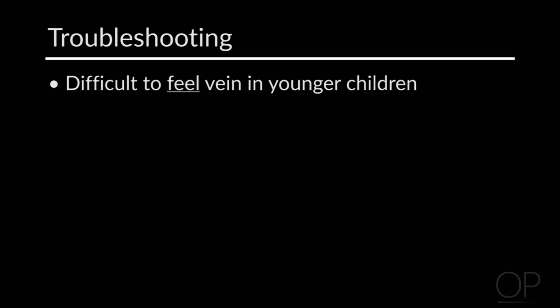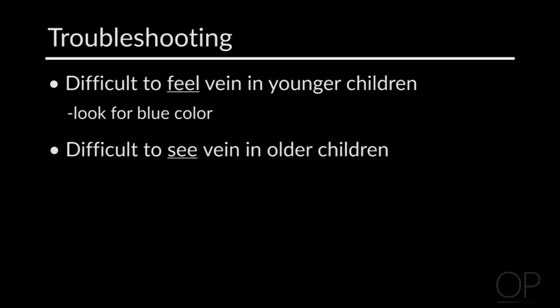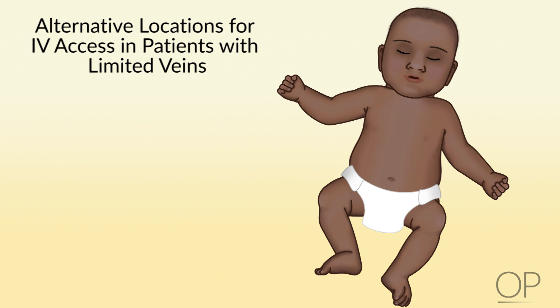Here are some troubleshooting tips. In younger children, it may be difficult to feel the veins — look for the telltale bluish color. In older children, it can often be hard to see the veins, so use palpation to find them; it should feel like a bouncy tube. For patients with limited veins: in infants, always check the scalp; check the upper arm area; the small veins on the inside of the wrist or fingers can also be useful, though be cautious of the nerve supply. You can also check on the sides or back of the patient's knees.